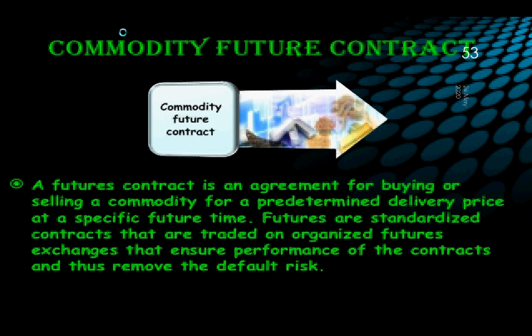A future contract is an agreement between buyers and sellers to buy and sell a commodity for a predetermined delivery price at a specific future time. The price is decided today, but delivery of the goods will take place in the future. These types of contracts are operated in organized futures exchanges and commodity markets in order to eliminate the default risks involved in buying and selling of commodities.